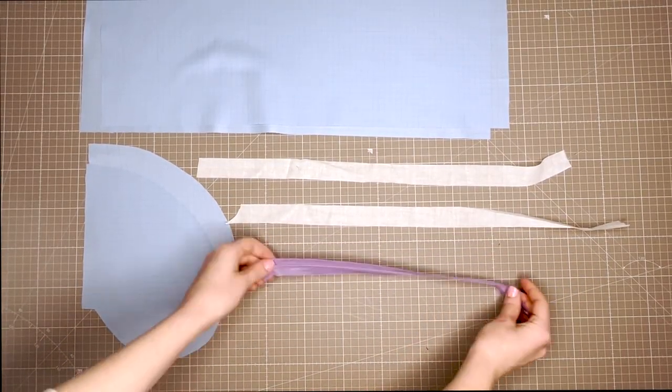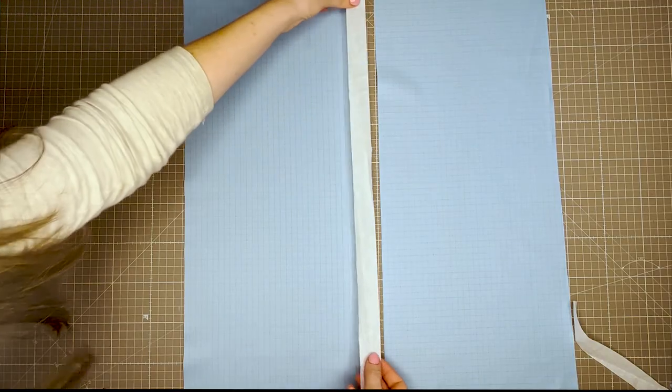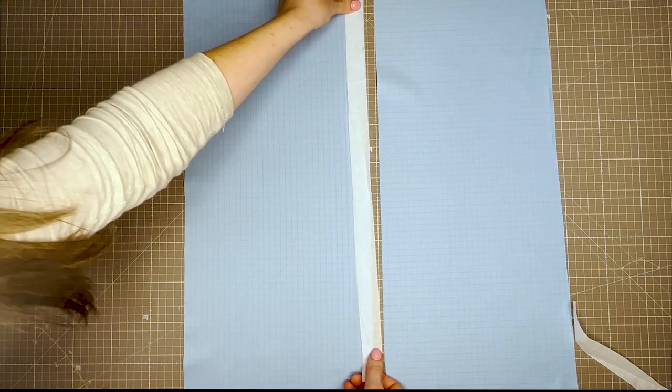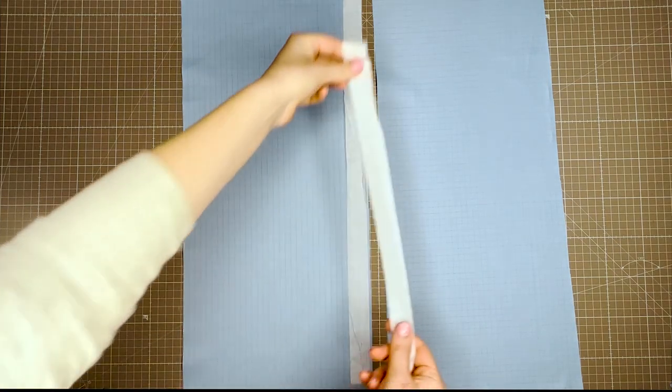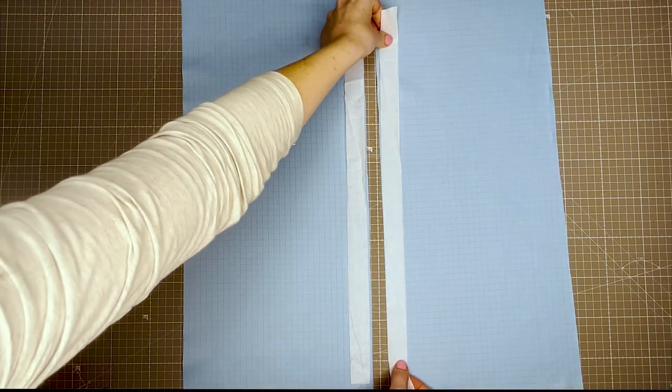To begin, you will take the front and back piece and apply the interfacing onto the wrong side of the edge of each piece. This will add structure and prevent wrinkling when we later apply our zipper.